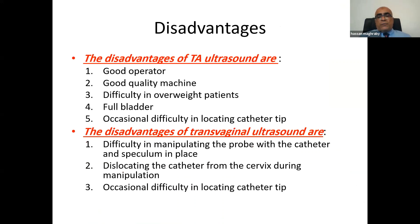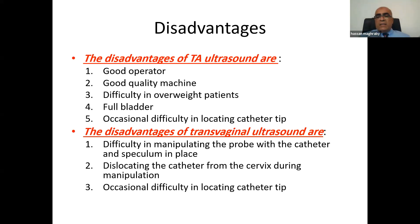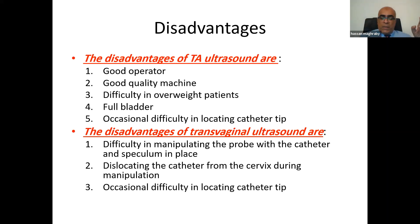The disadvantages of trans-abdominal ultrasound are that it needs a skilled operator and a good machine, requires a full bladder, creates difficulty in overweight patients, and occasionally makes locating the catheter tip difficult — if the catheter moves away from the ultrasound beam, it may touch the fundus and decrease the pregnancy rate. The disadvantages of trans-vaginal ultrasound include difficulty manipulating the probe with the catheter and speculum in place, risk of dislocating the catheter while moving the probe, and occasional difficulty locating the catheter tip.